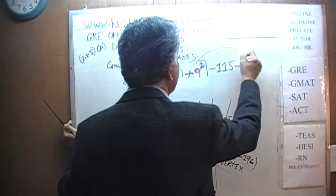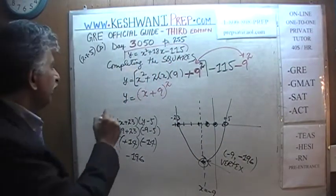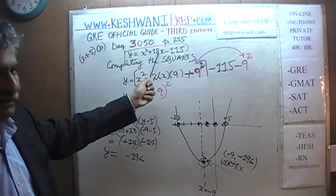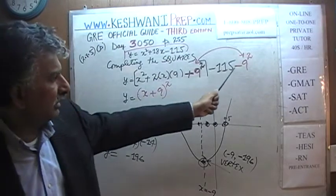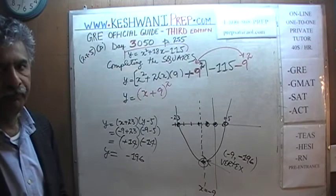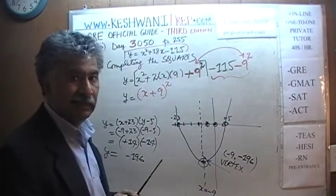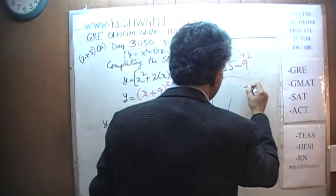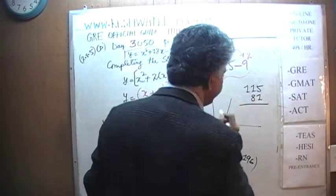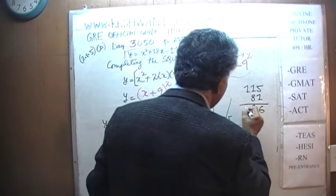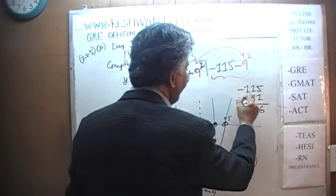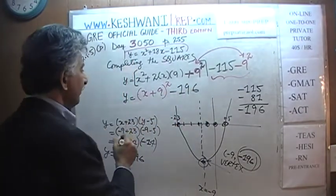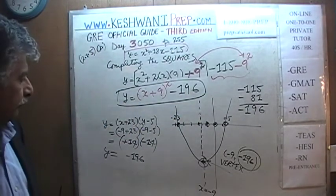After the cancellation, we are left with the original parabola. The remaining constant is −115 − 9², which is −115 − 81 = −196. So the equation in vertex form is y = (x + 9)² − 196. This gives us the vertex coordinates directly by visual inspection: the vertex is at (−9, −196).